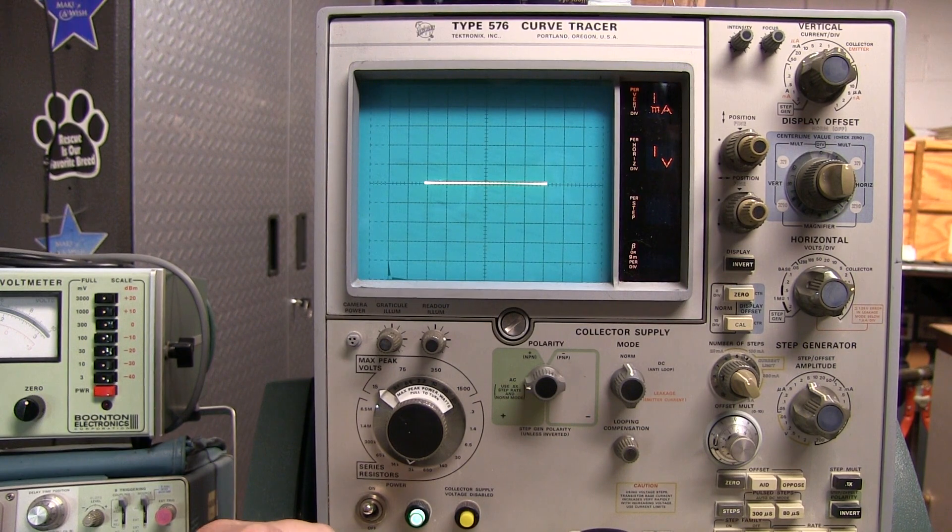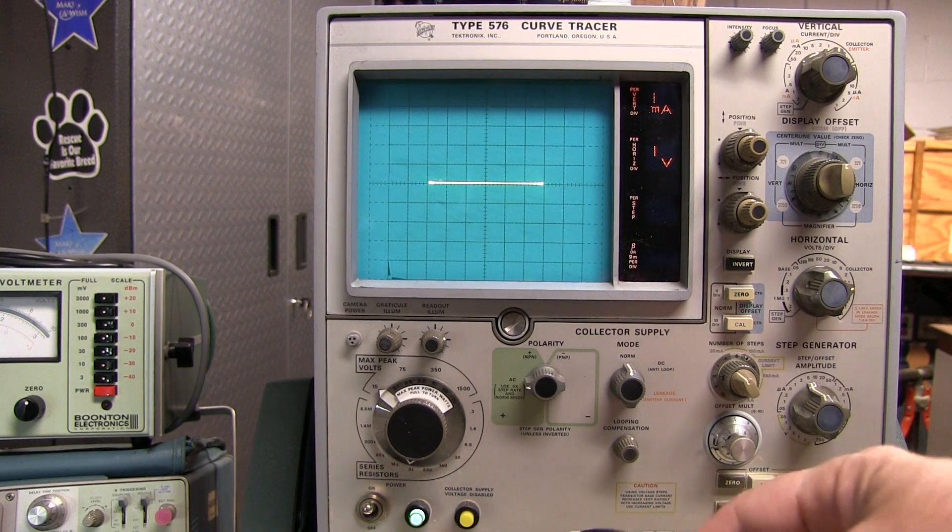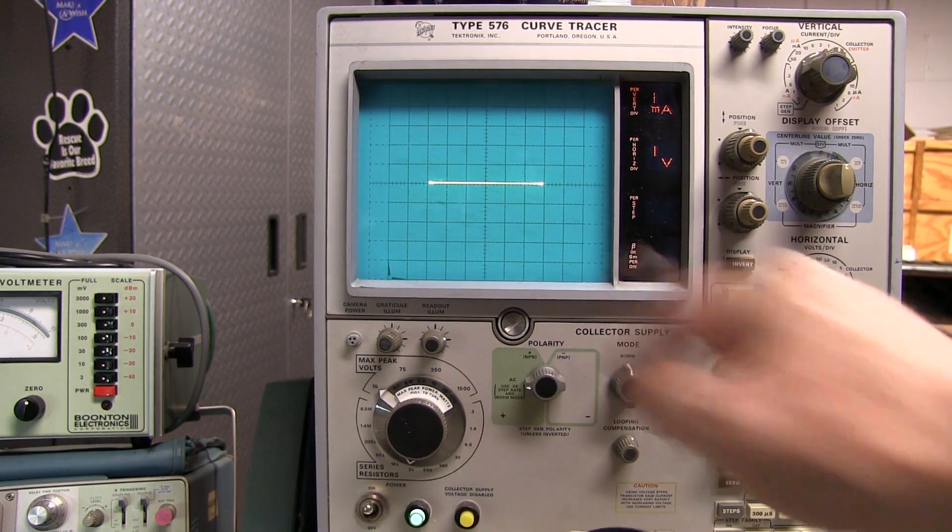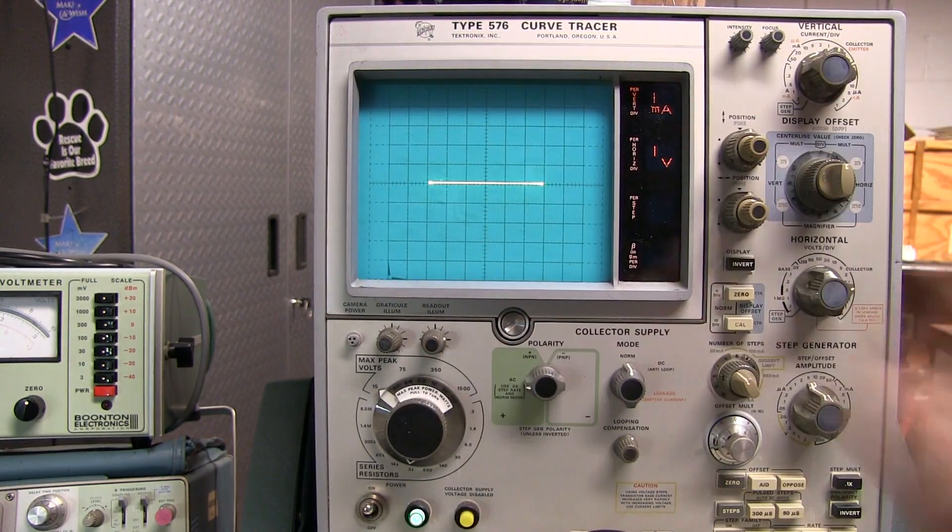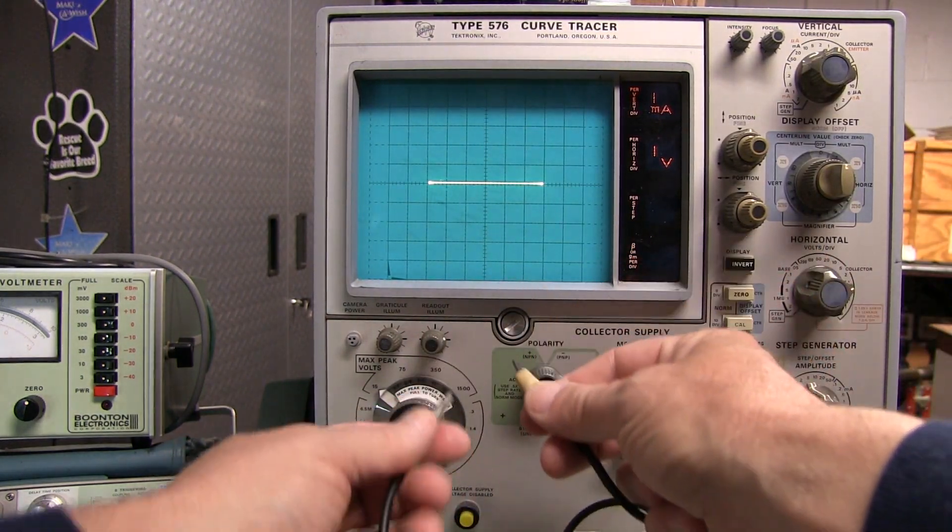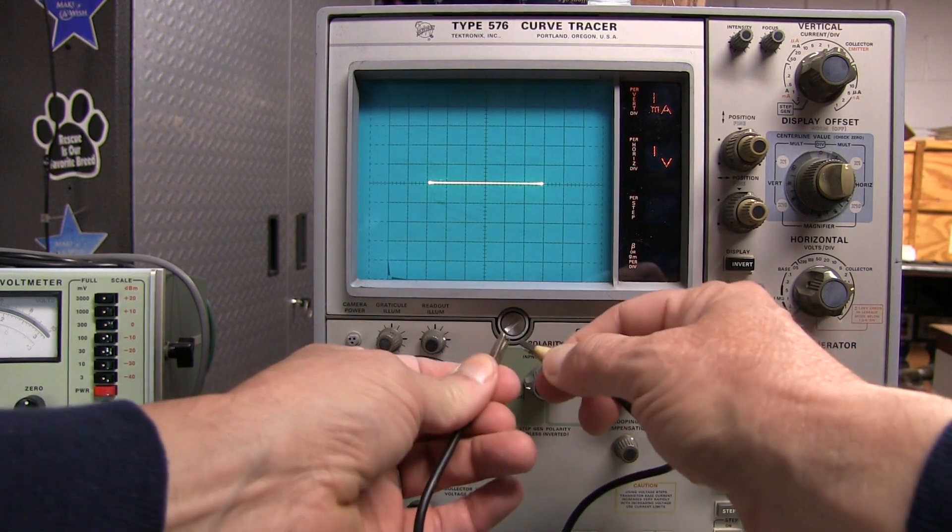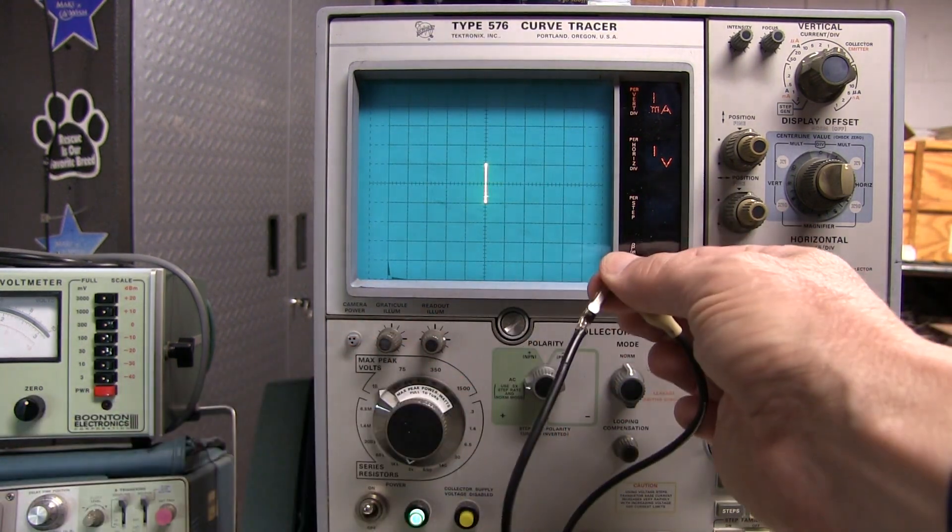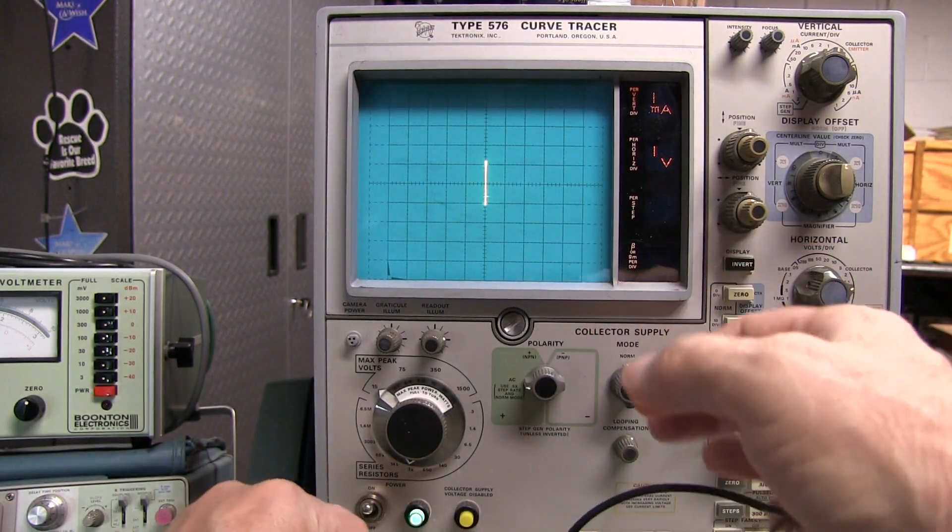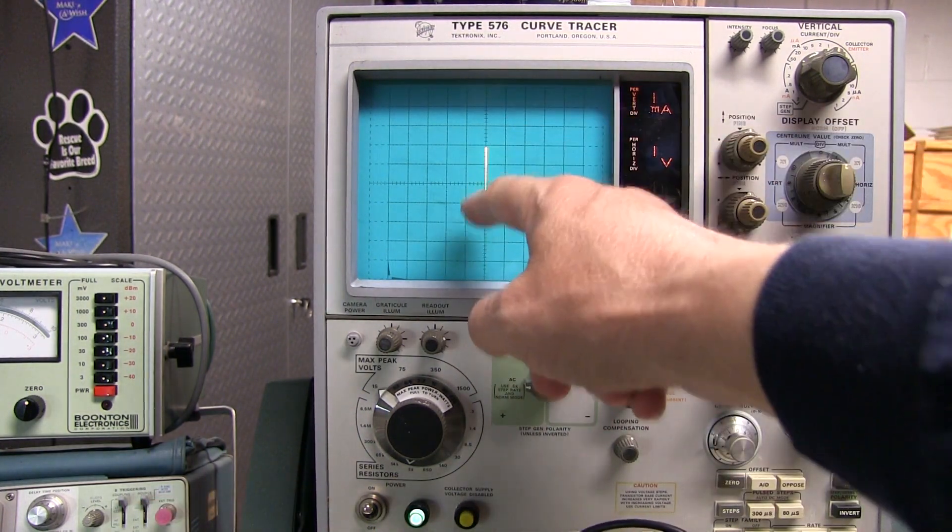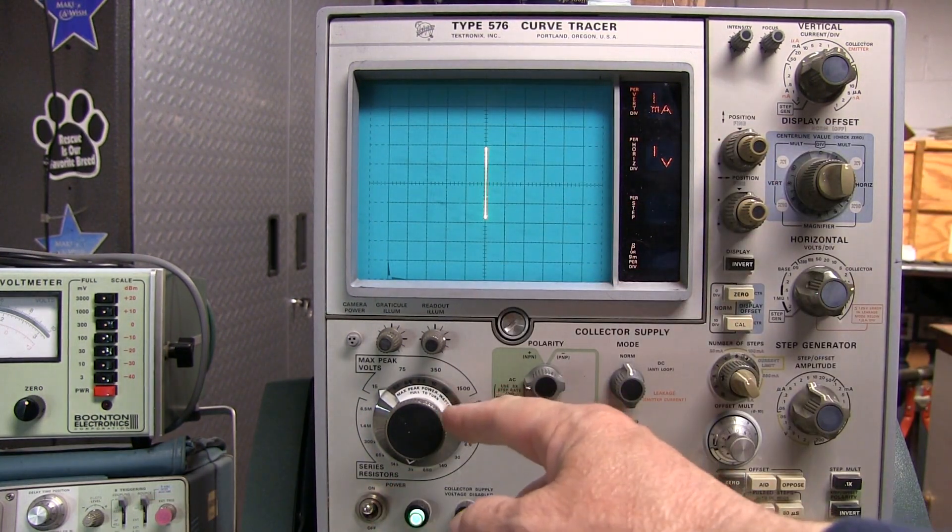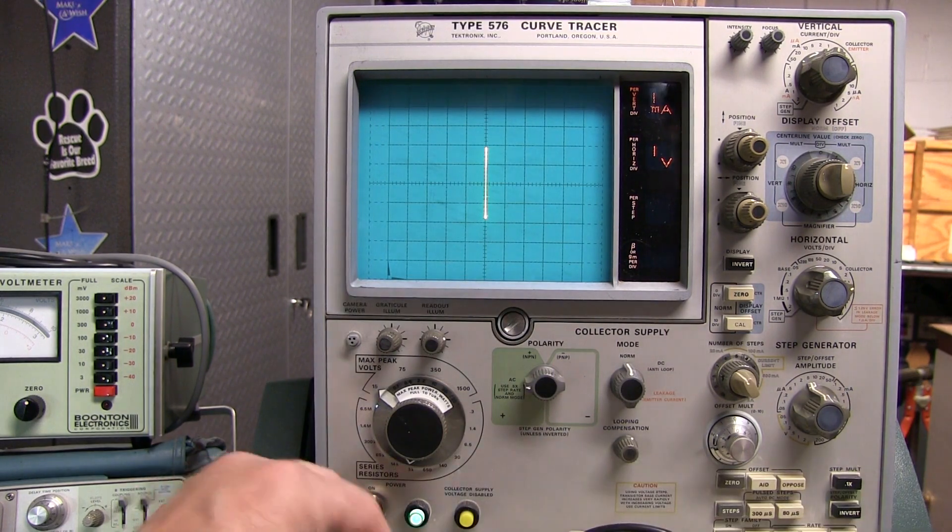And of course, with an open circuit, applying that voltage across these two open wires, we're not going to get any current flow, so we get a straight line. If we short these two terminals together, we're essentially going to get no volts across the device under test since it's shorted together. And we're just getting current flow, which is essentially the applied voltage divided by the series resistor of 3k ohms.